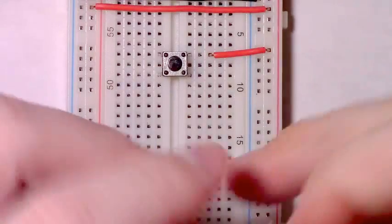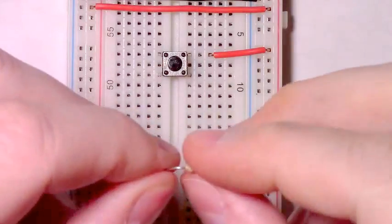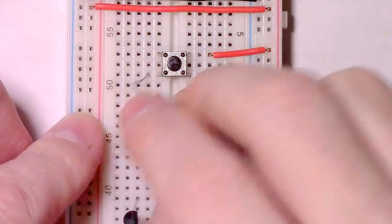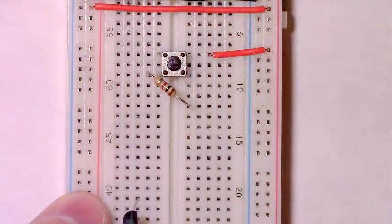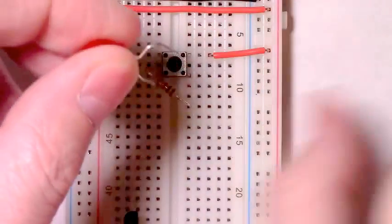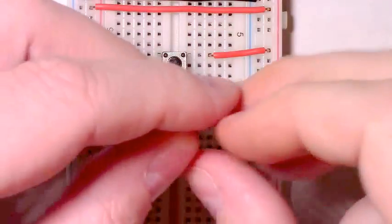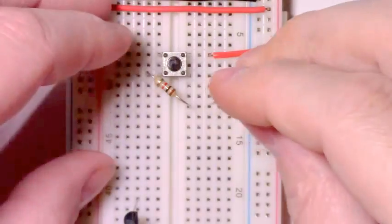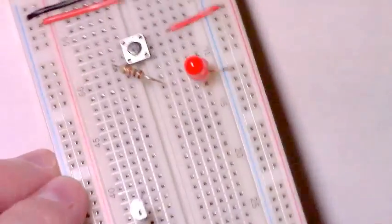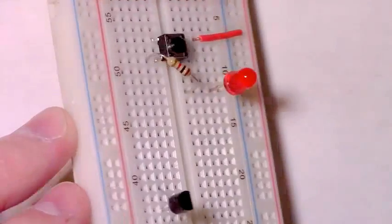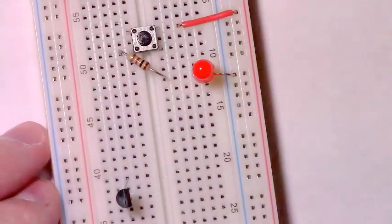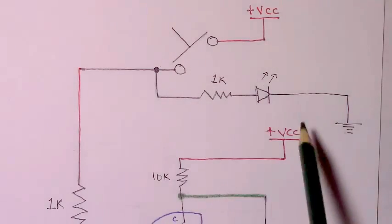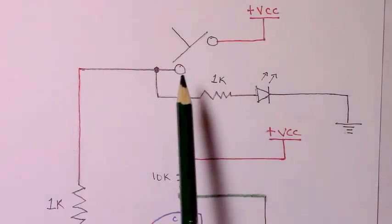Then we can take a 1K resistor coming off the bottom left-hand leg of our momentary button and connect our indicator LED with the cathode facing the ground rail. Just like that. We just took care of our input control and indicator LED.